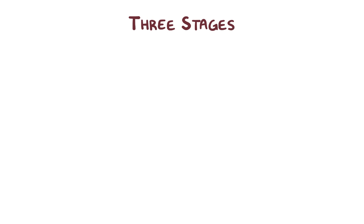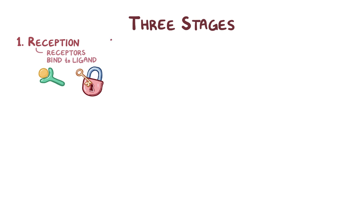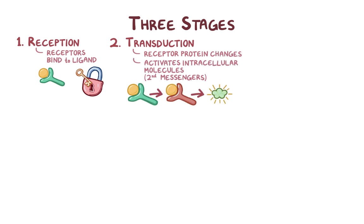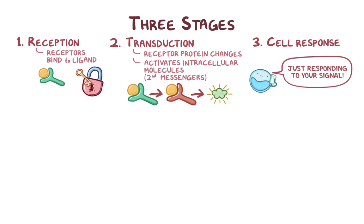We can think of the cell signaling pathway in three stages. The first stage is reception, which is when the target cell's receptors bind to a ligand — it's like a key fitting into a lock. Then there's transduction, which means that the receptor protein changes in some way and activates intracellular molecules, the second messengers. The third stage is the cell's response to the signal.